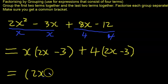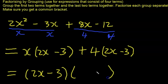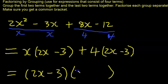We factor out (2x minus 3), which appears in both terms. After factoring out (2x minus 3) from both terms, we are left with positive x and positive 4. So the final answer is (2x minus 3)(x + 4), and we are done.